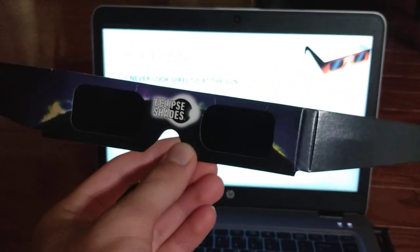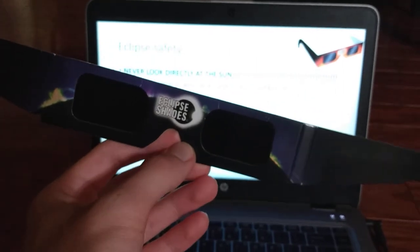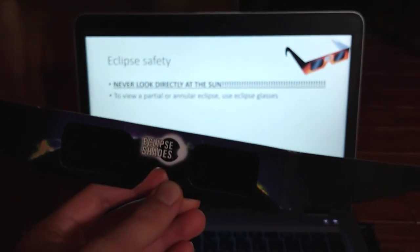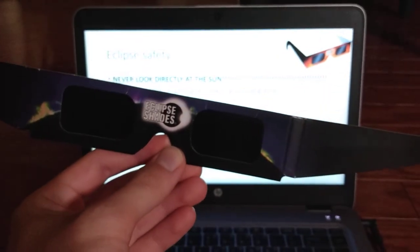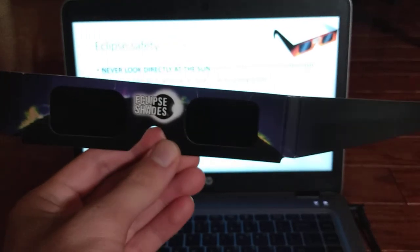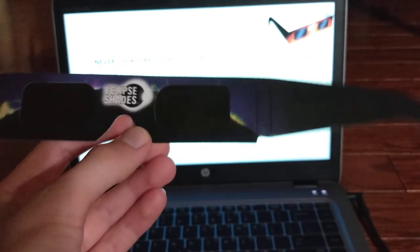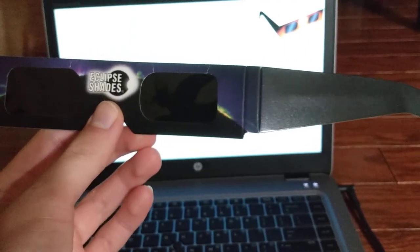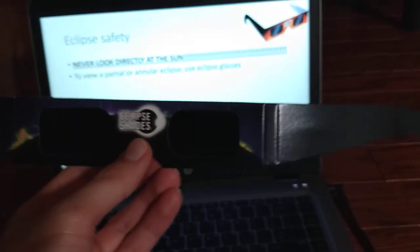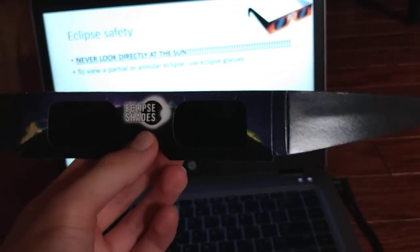Be sure before you use them, you check to make sure there are no scratches or holes that will allow sunlight to get to your eyes. You can do that by putting them on indoors and looking around. If you can't see anything, then they're good. But if you can see something, then don't use them.